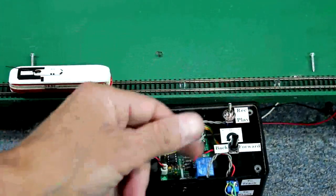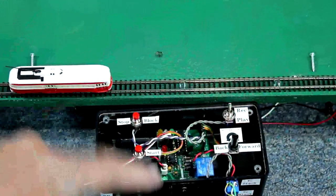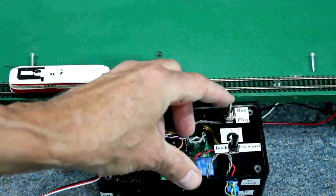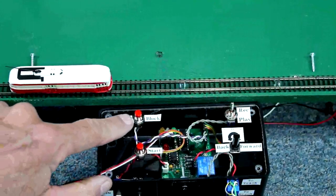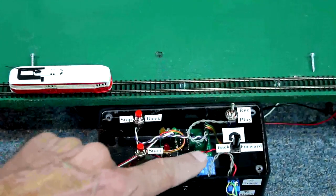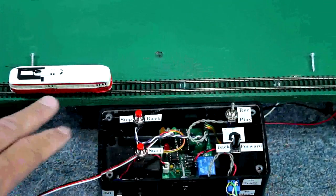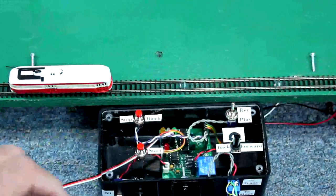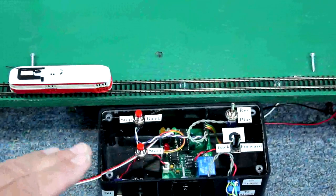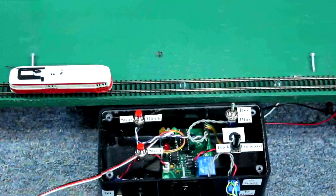The record playback switch determines whether you're going to record a session or playback. The stop block button activates the relay which kills power to a section of track that's between these two screws on the platform, so that you can resynchronize the position of the trolley each time you run it.